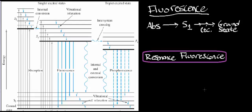Welcome back to the playlist on analytical chemistry and instrumental analysis. To review what we were doing in the last video, we talked about this phenomenon right here, which is called fluorescence. In fluorescence, we started out with the electrons comfortable down in the ground state, and the molecule or atom absorbed a photon of light.